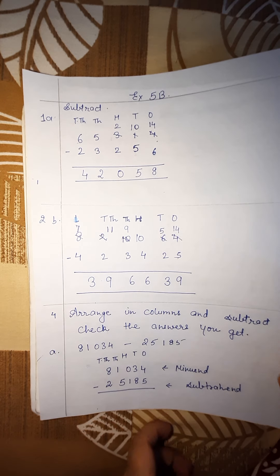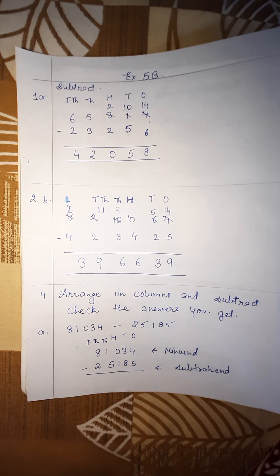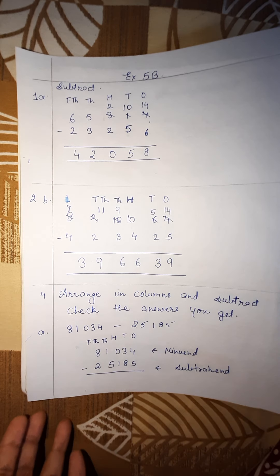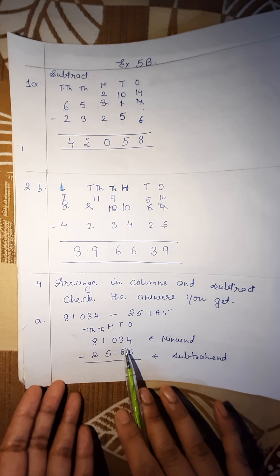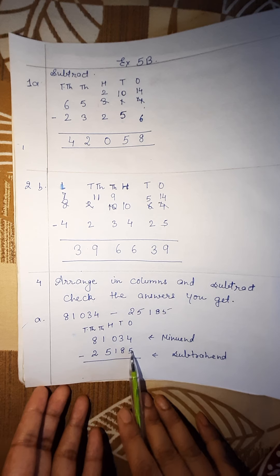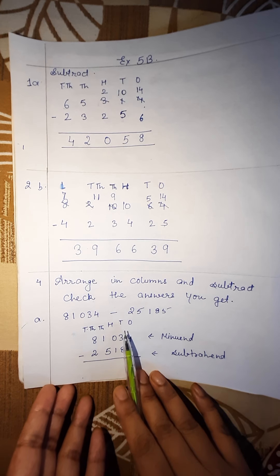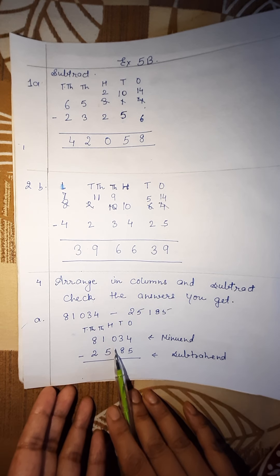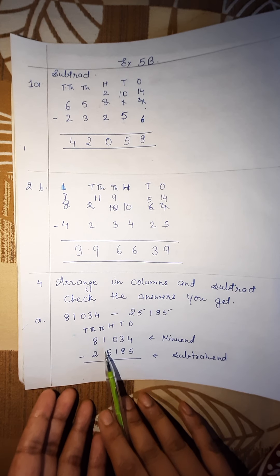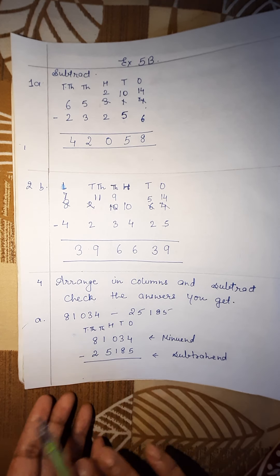Now we are doing question number 4A. In this question, what you have to do? You have to arrange the given numbers in columns first, and then you have to subtract. Then after, you have to check the answers. First we will arrange the numbers. We have 81,034. As it is greater, so we have to write it first. Then you have to write 25,185. It should be arranged so that the 1s lie under 1s, the digits at 10's place come under 10's, 100's under 100's, 1000's under 1000's, and 10,000's under 10,000's. Now start subtracting.